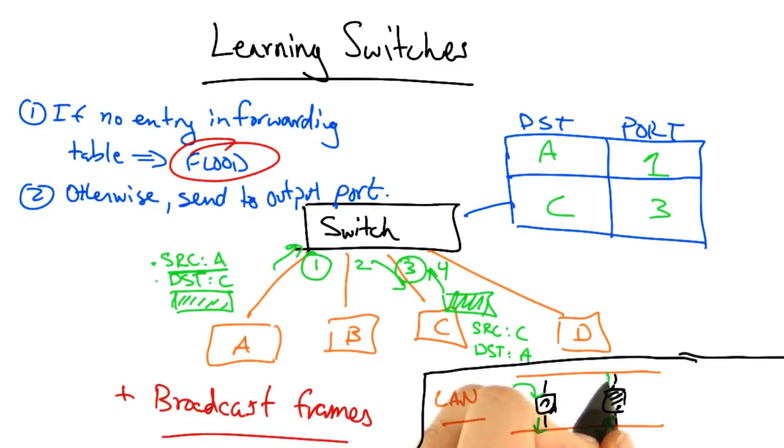This switch will, in turn, broadcast the packet on its output port, and now we have a loop. Therefore, if the network contains cycles of switches, then flooding can lead to these types of forwarding loops.